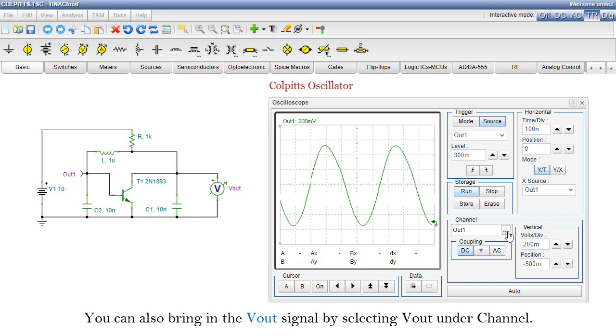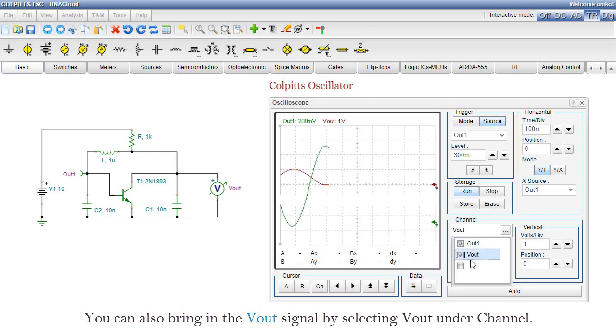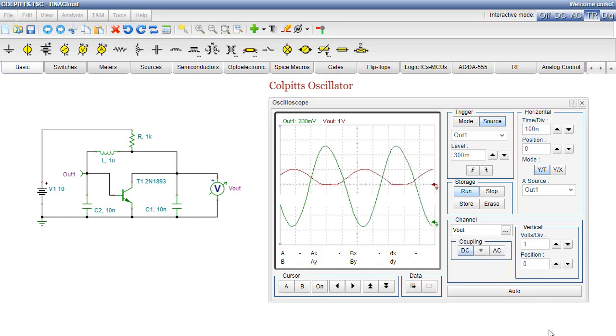You can also bring in the VOUT signal by selecting VOUT under Channel. Let's have the same vertical settings for VOUT as for OUT1.